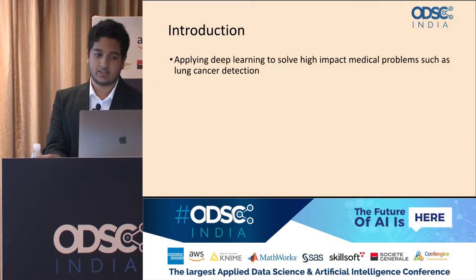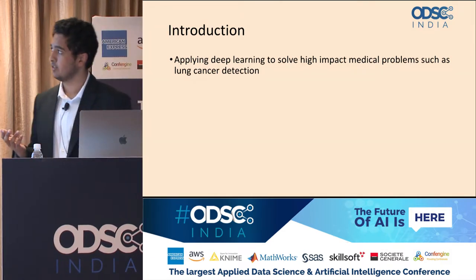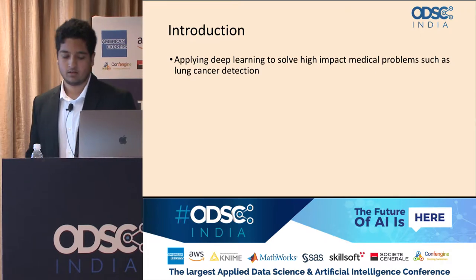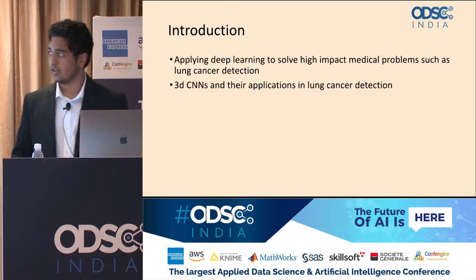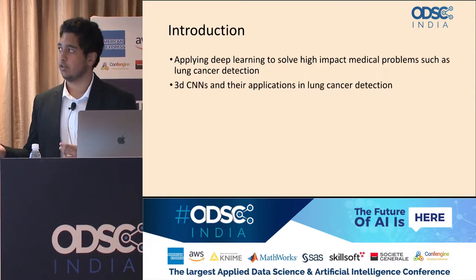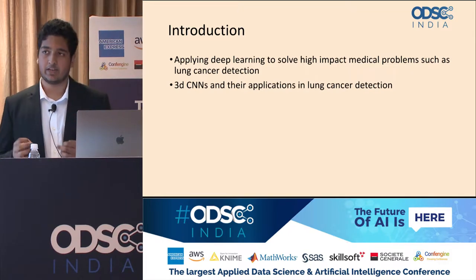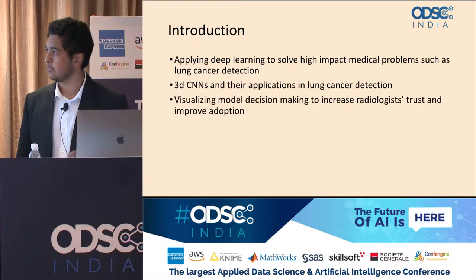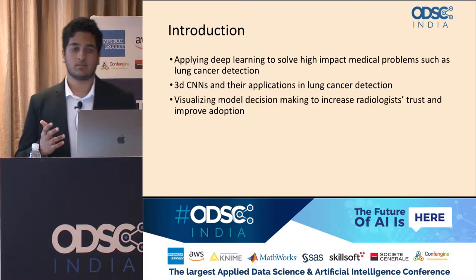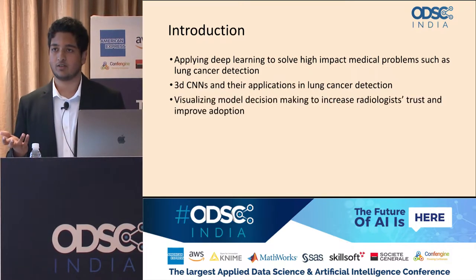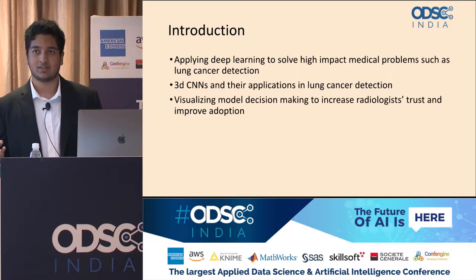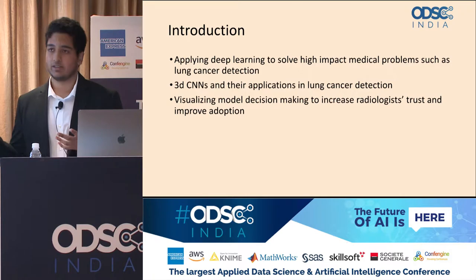The question is: how can deep learning methods be used to solve high-impact medical problems such as lung cancer detection? And more specifically, how can we use 3D convolutional neural networks for detection of lung cancer? Another problem is that no matter how good your deep learning model is, if it's not interpretable to people in the domain, it's really hard for them to adopt it.